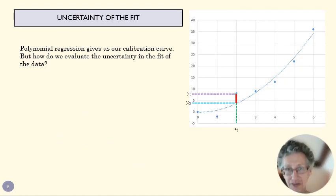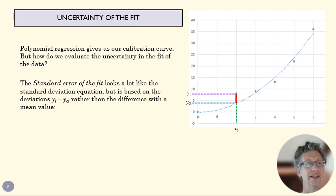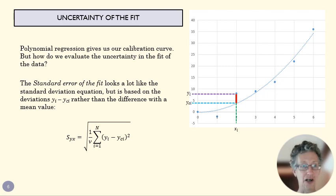That's going to give us our curve. Then we want to evaluate the uncertainty in that fit. Those deviations are going to serve a different purpose for us to figure out how good the fit is. The standard error of the fit looks a lot like our standard deviation. Here's the deviation between our data point and our curve for each data point. We square that to make it positive, we sum it all up, we divide it by the number of things that we summed up and we take the square root. So this is basically a curve form of standard deviation.